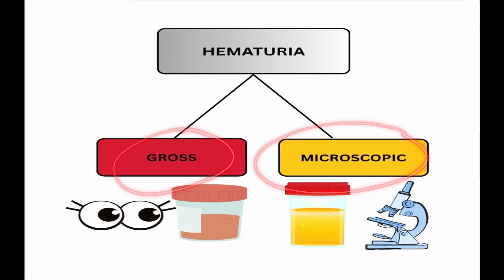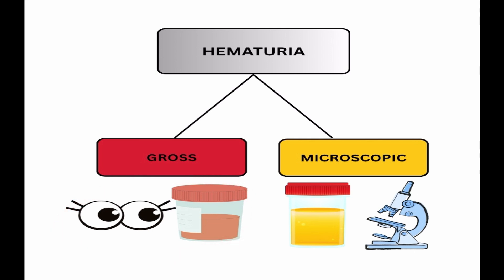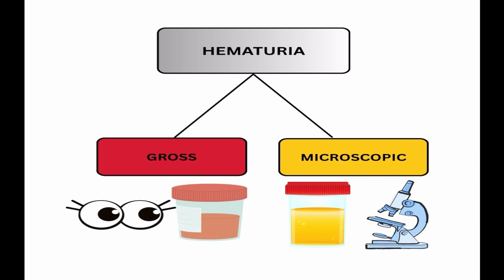Gross hematuria means that when a child passes urine, you can see blood in it with your naked eyes. Microscopic hematuria means that the urine which you see is clear, but when you examine the sample of urine under a microscope you're going to see a lot of RBCs. So how many red blood cells do we need in a sample of urine to label a patient as having hematuria?